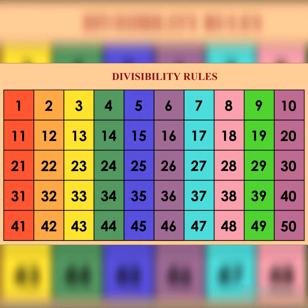Let's learn and remember divisibility rules. Divisibility by 2 – a number is divisible by 2 if its units place is either 0 or a multiple of 2.